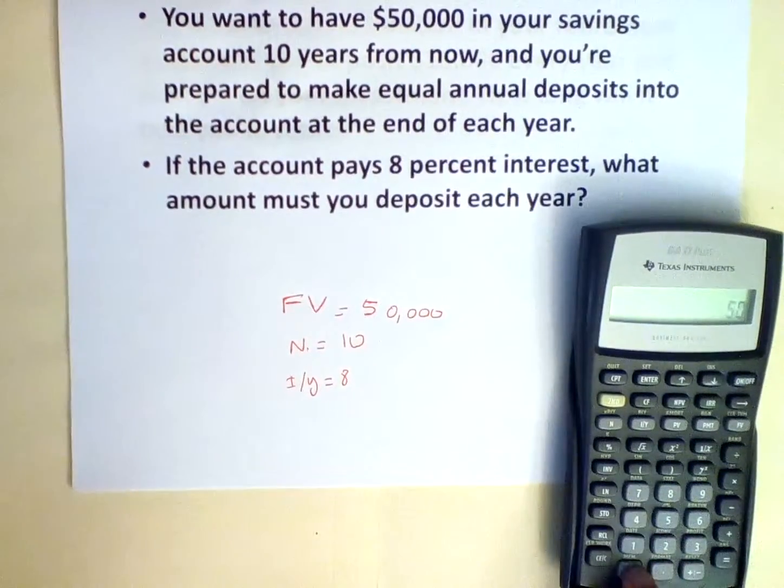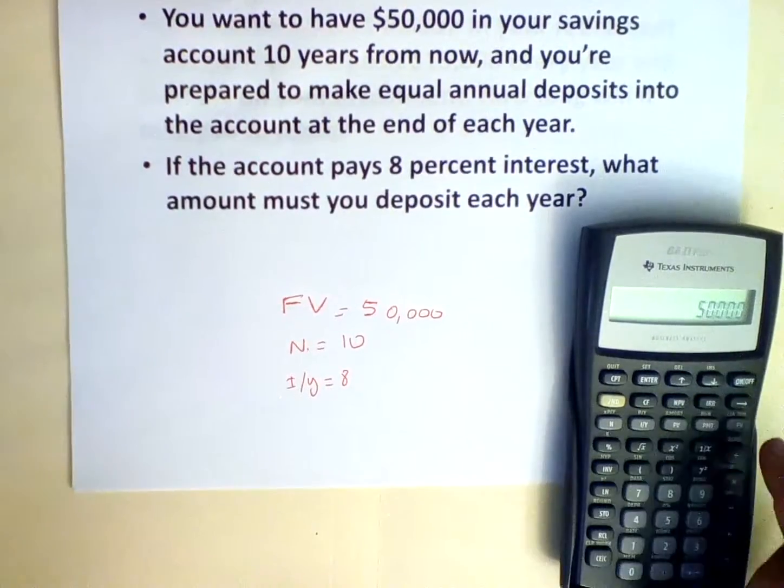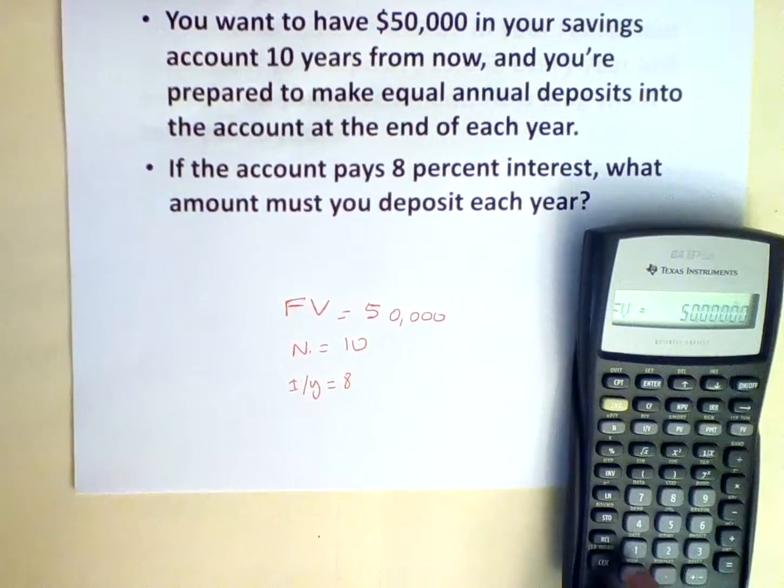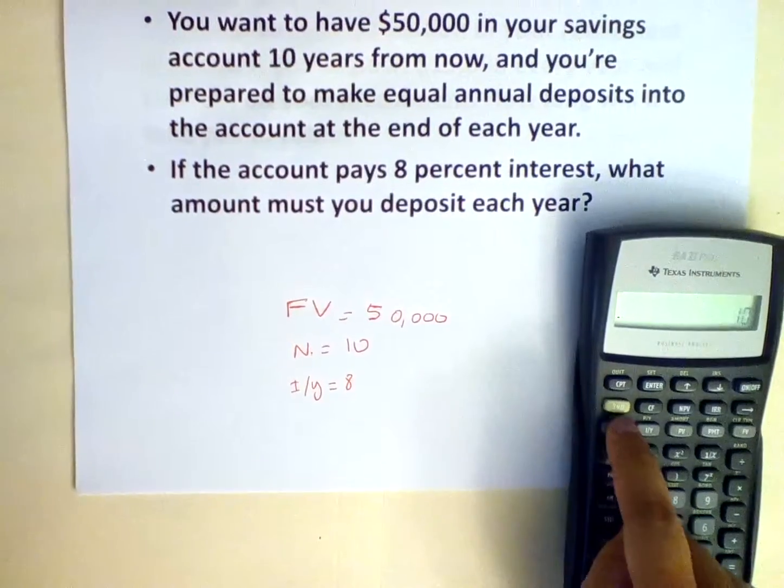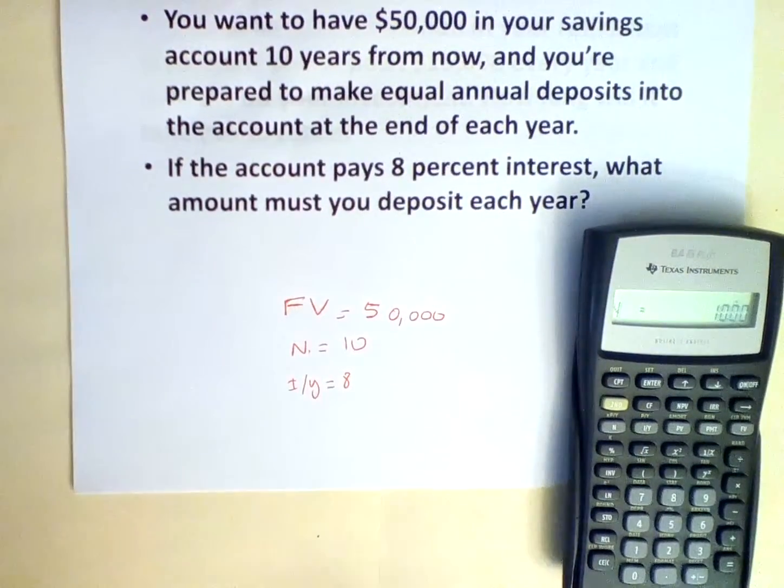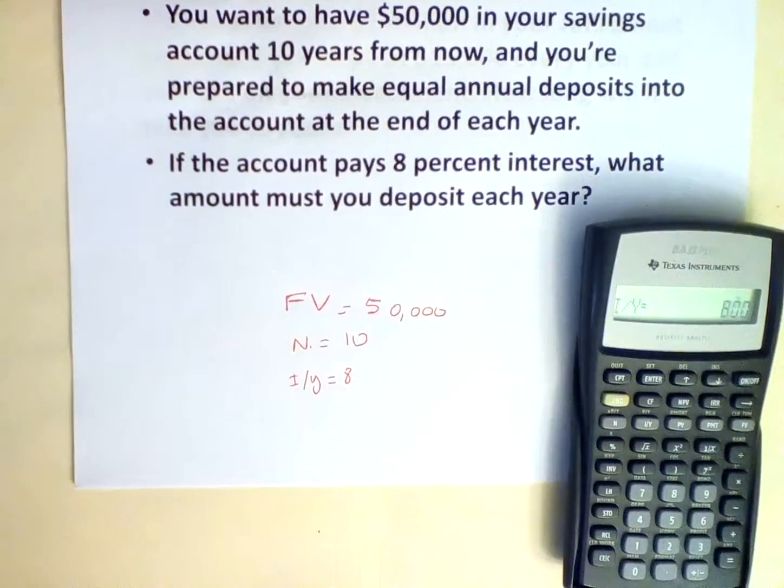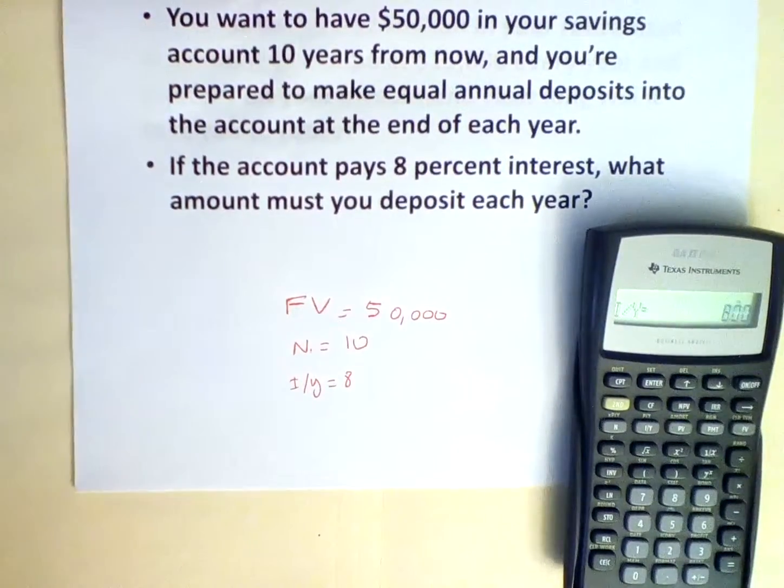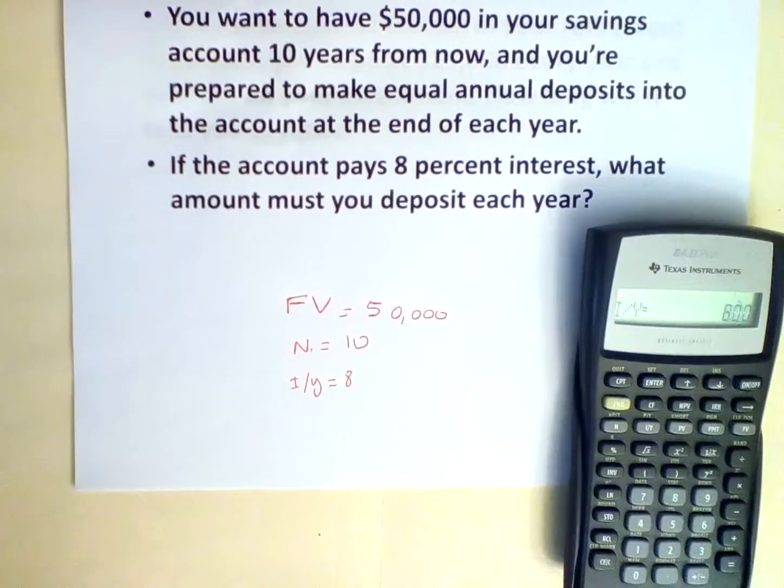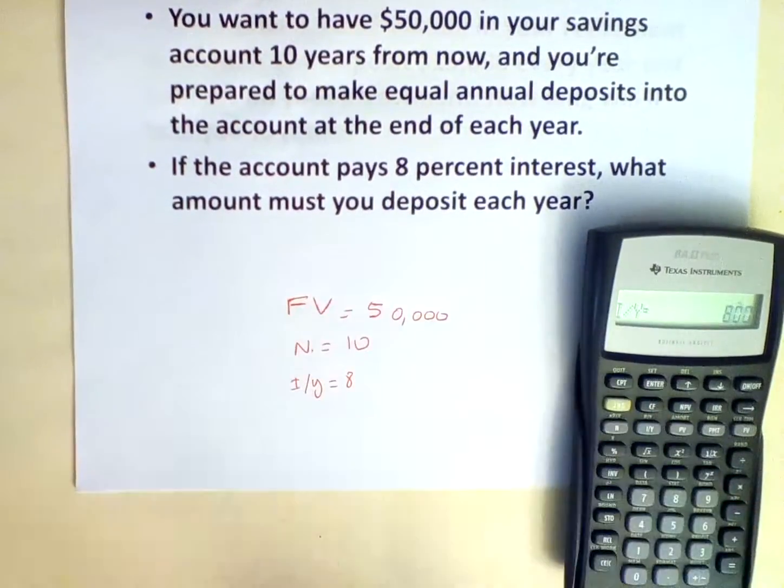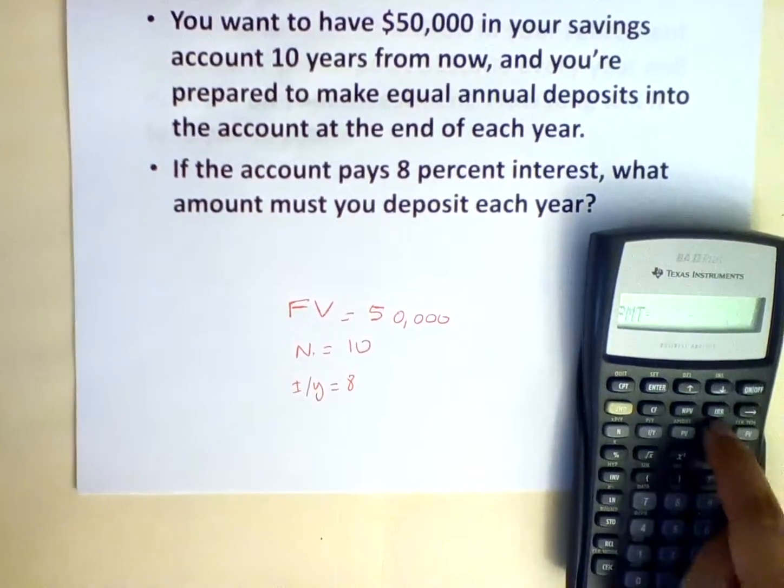We input $50,000 and push the FV button, 10, push the N button, 8, we push the I over Y button, and to determine the deposit to be made each year, we hit CPT, meaning compute PMT.